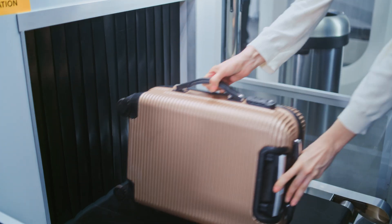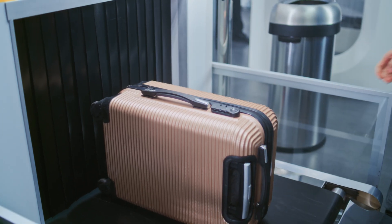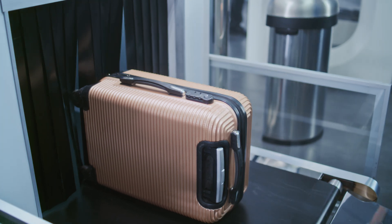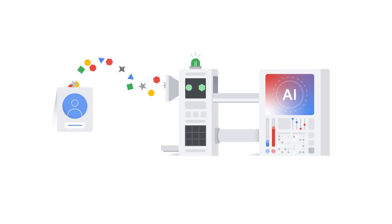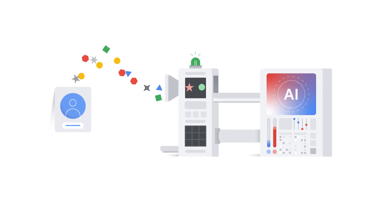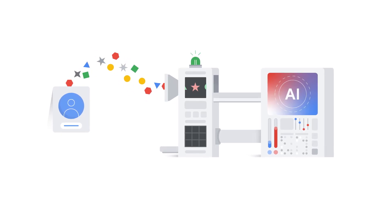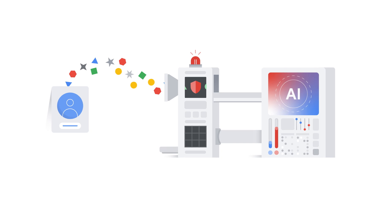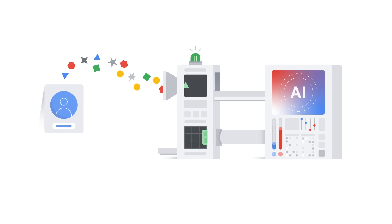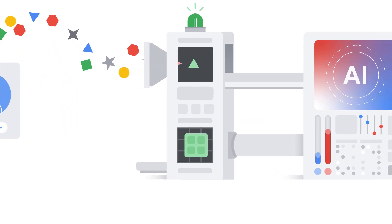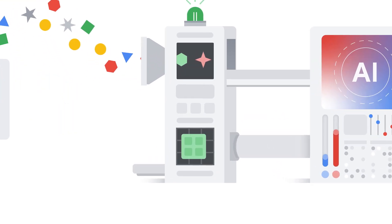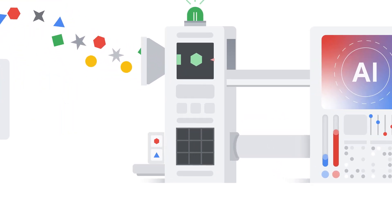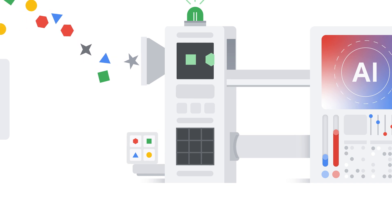When a prompt comes in, it has to put its bag on that conveyor belt. If the prompt is deemed harmful, security will raise an alert. Likewise, the LLM's response also goes through that security conveyor belt to make sure nothing funky is going on.